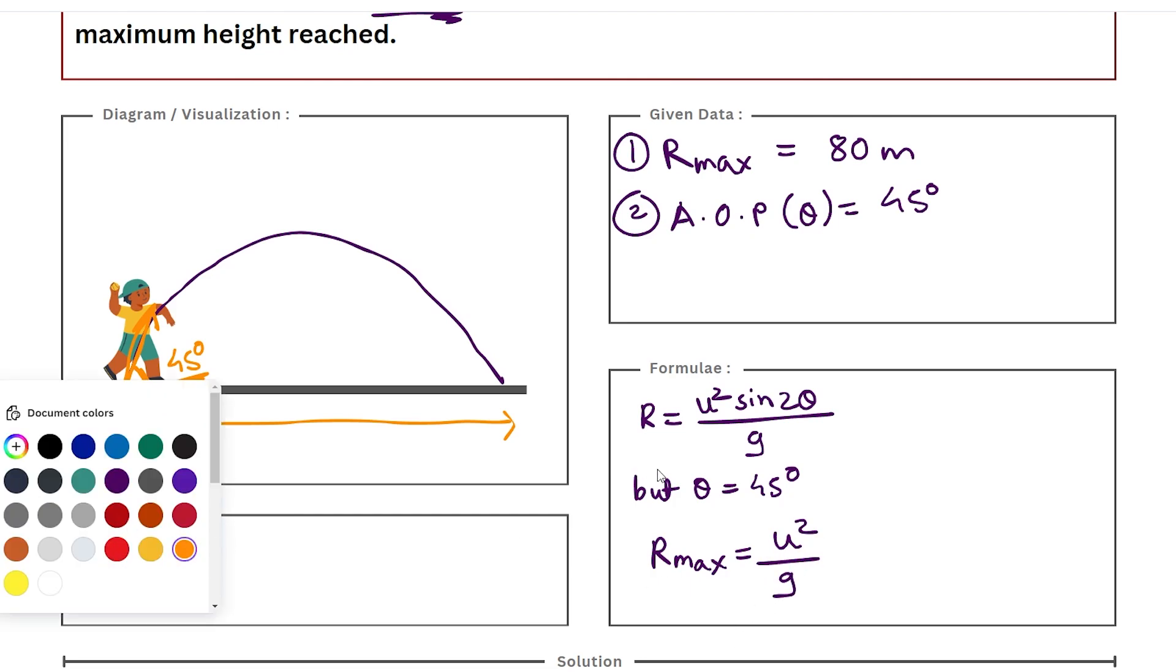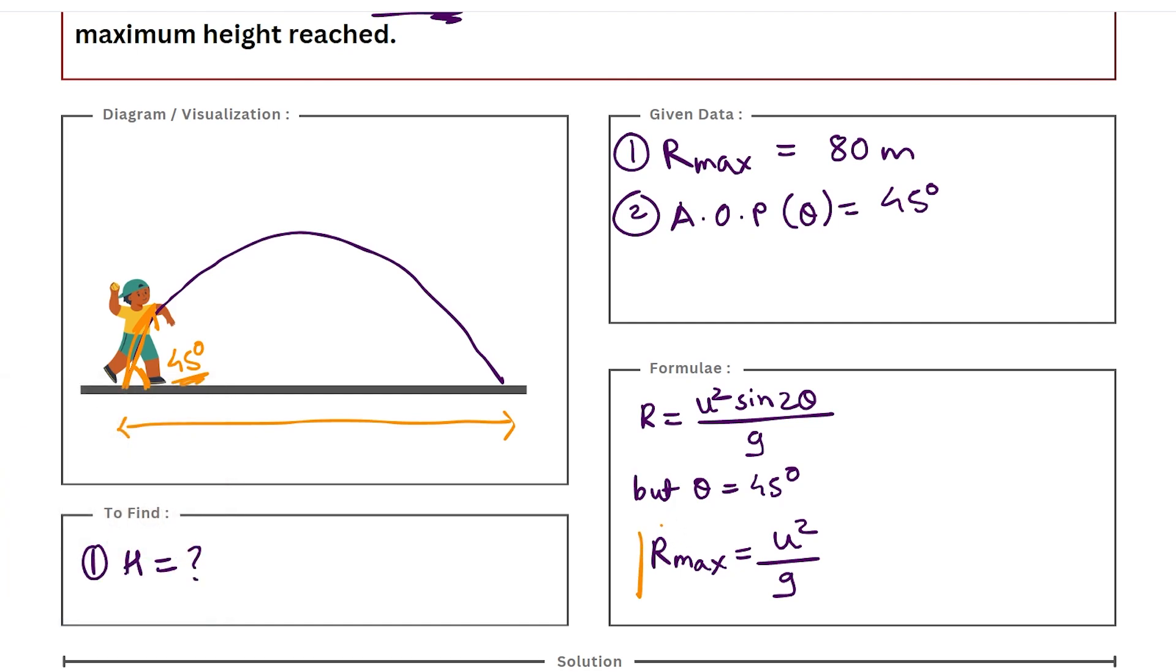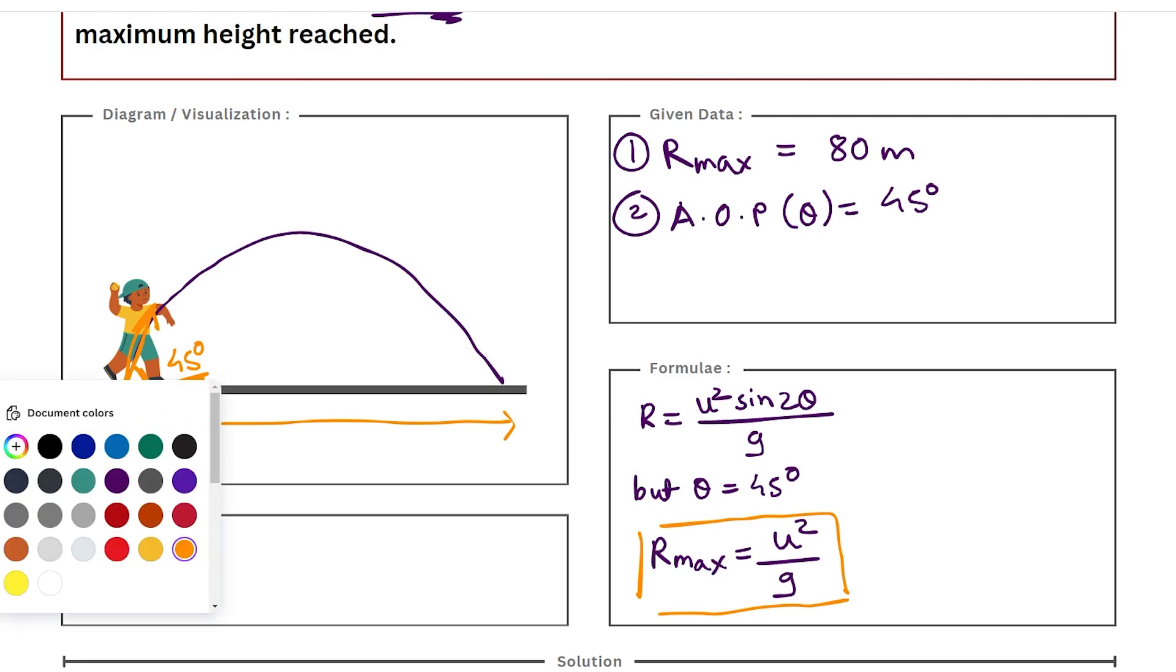So this is a new formula added to your formula list and this is a special case formula for when you have to calculate your maximum range. So you can calculate using u²/g formula.